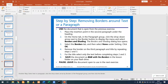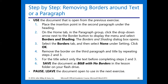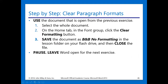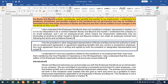Now, removing borders around a text or a paragraph. Here are the steps — we are going to use the same document open from our previous exercise. In the Home tab and in the paragraph group, we are going to click the arrow next to our border button, go to the Borders and Shading dialog box, and in the Borders tab we are going to select None under Setting, and then remove the border on the third paragraph and repeat the steps for the other paragraph. Then we are going to save our document as 'B and B with no borders.'